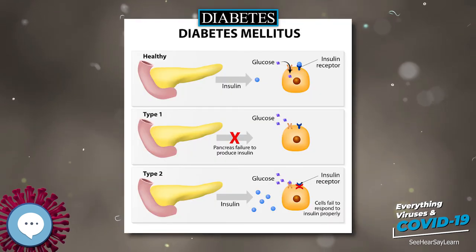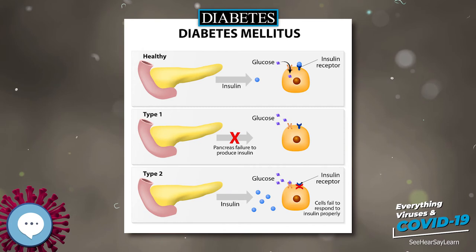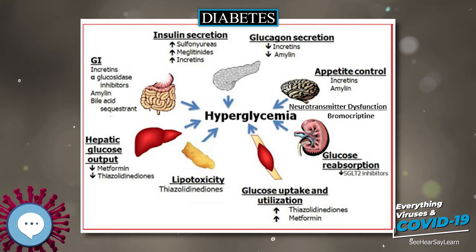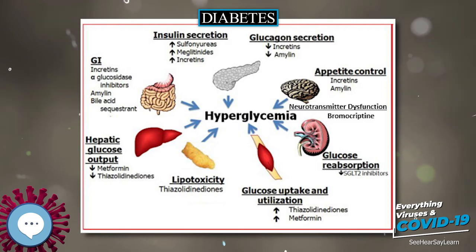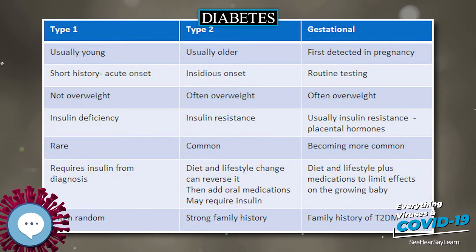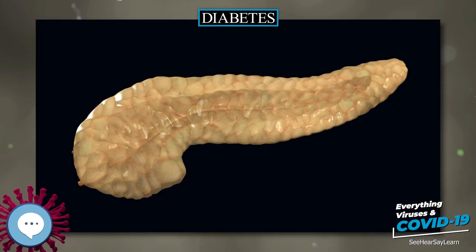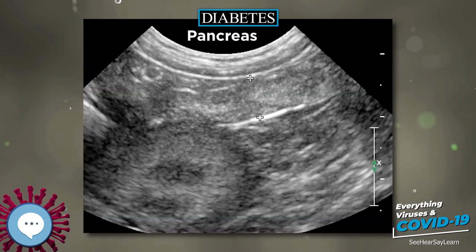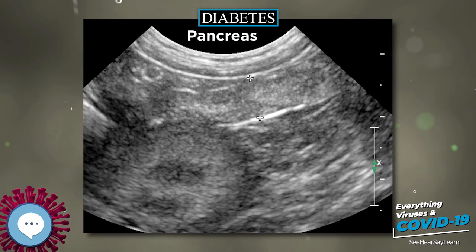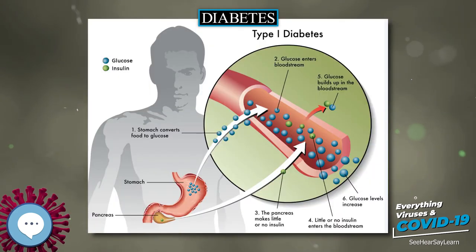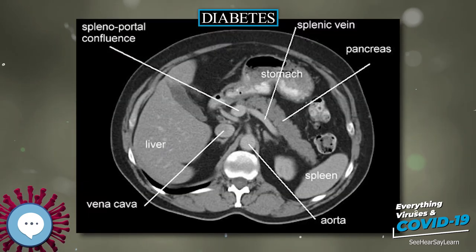People with diabetes can benefit from education about the disease and treatment, dietary changes, and exercise, with the goal of keeping both short-term and long-term blood glucose levels within acceptable bounds. In addition, given the associated higher risks of cardiovascular disease, lifestyle modifications are recommended to control blood pressure. Weight loss can prevent progression from prediabetes to type 2 diabetes, decrease the risk of cardiovascular disease, or result in a partial remission in people with diabetes.